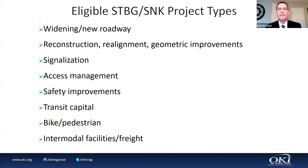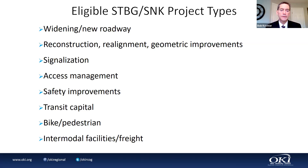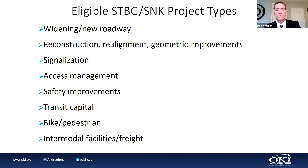Here is a list of eligible STBG-type projects — not exhaustive, but it covers just about everything we've seen. You can widen or build a new roadway, reconstruct, realign, do geometric improvements, add signals, incorporate access management techniques, and other safety improvements. Transit capital projects including bus replacements, park-and-rides, and transit stations are eligible. Bike and pedestrian facilities, intermodal facilities, and freight facilities are all STBG-eligible. Note that roadway projects cannot be used on local routes.